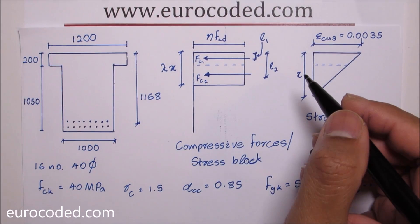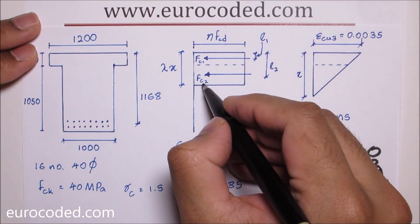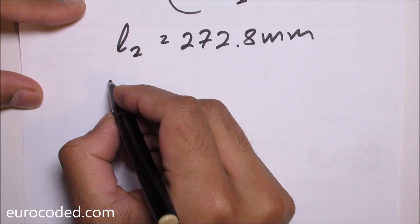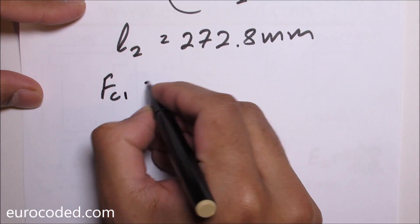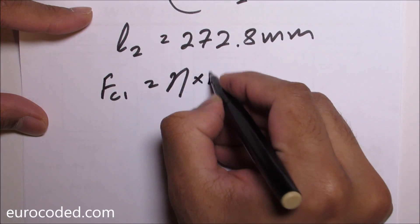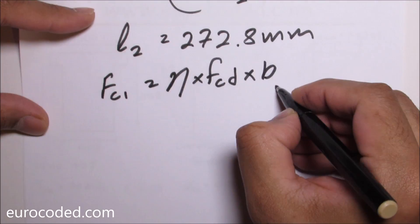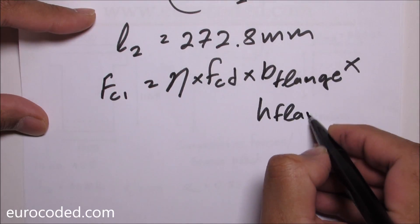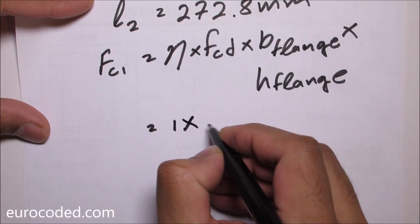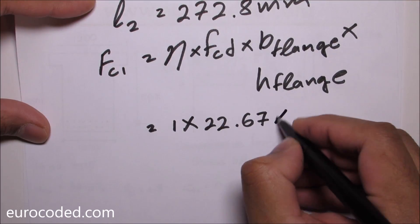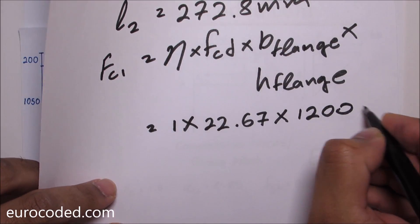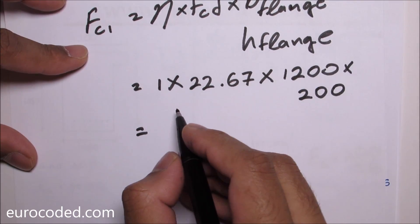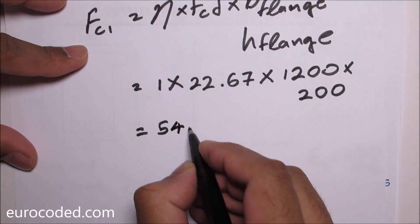Then what we need to do is calculate FC1 and FC2. These are the compressive forces in the compression zone within the flange and the compression zone within the web. We can write FC1 is equal to eta times FCD times width of the flange times the depth of the flange. If you convert the units then this value is going to be 5440 kN.